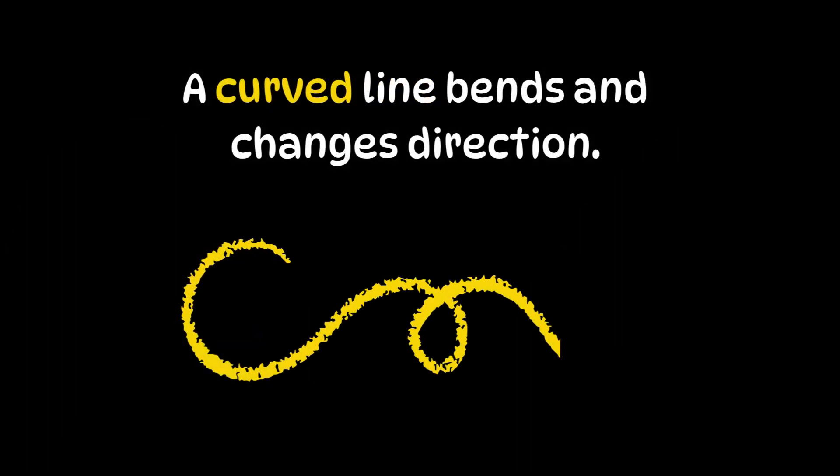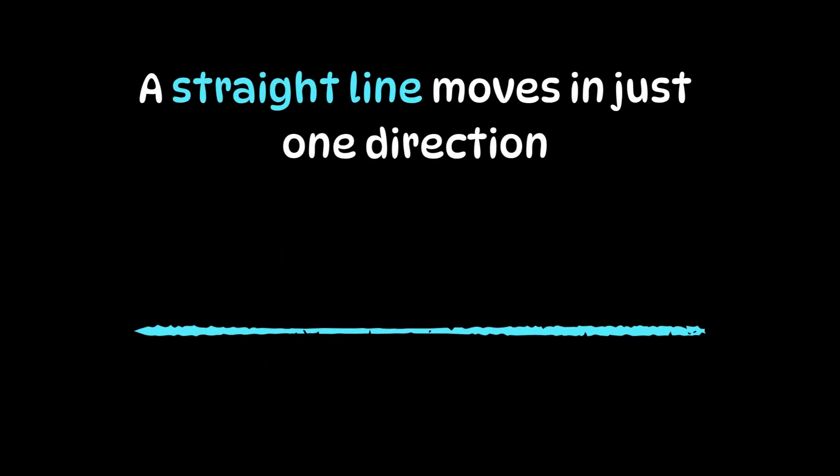A curved line bends and changes direction. A straight line moves in just one direction. There is no bending.